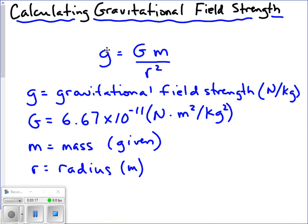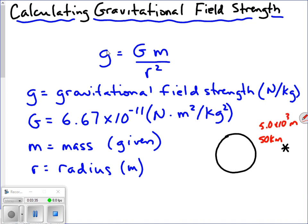For example, say we have the Earth and a satellite orbiting at a distance of 50 kilometers above the surface. We first have to convert that into meters — 5.0 times 10 to the third meters — and then add on the radius of the Earth. The total distance is the altitude above the surface plus the radius of the Earth. The radius of the Earth is given in the data booklet along with other constants on page 2.